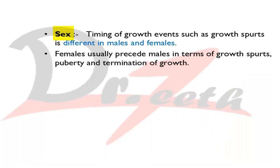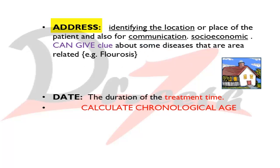Regarding gender and sex: the timing of growth between males and females is different, especially the growth spurts — phases of increased rate of growth. Accordingly, the intervention timing in males and females will be different. Females usually precede males in terms of growth spurts, puberty, and termination of growth, so growth termination in females will be earlier compared to males.